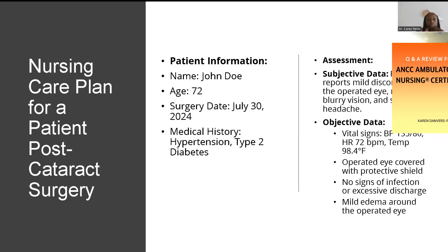Let's look at a case study. Patient John Doe, 72-year-old, had left eye surgery in July. Medical history: hypertension, type 2 diabetes. Patient reports mild discomfort in the operated eye, mild blurry vision, and a slight headache. Vital signs: BP 135/80, heart rate 72, temperature 98.4. The operated eye is covered with a protective shield, no signs of infection or excessive discharge, and there is mild edema around the operative eye.